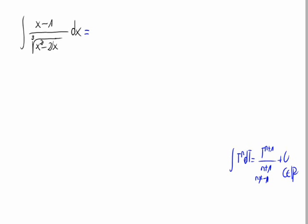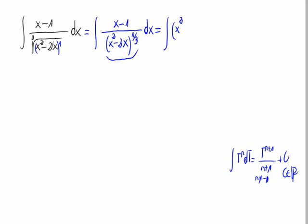Let's try if using this formula we can solve this out. On the denominator we have, writing it as a fractionary exponent, x squared minus 2x raised to 1 third — the 3 is because of the cube root. The denominator can then be written with a negative exponent, giving us x squared minus 2x raised to minus 1 third, times x minus 1 in the numerator.